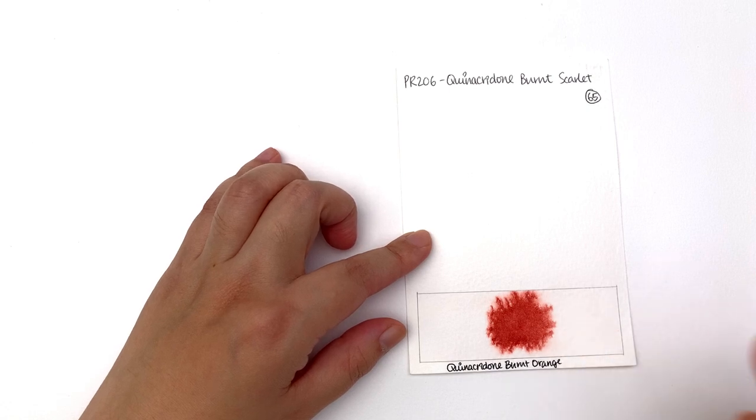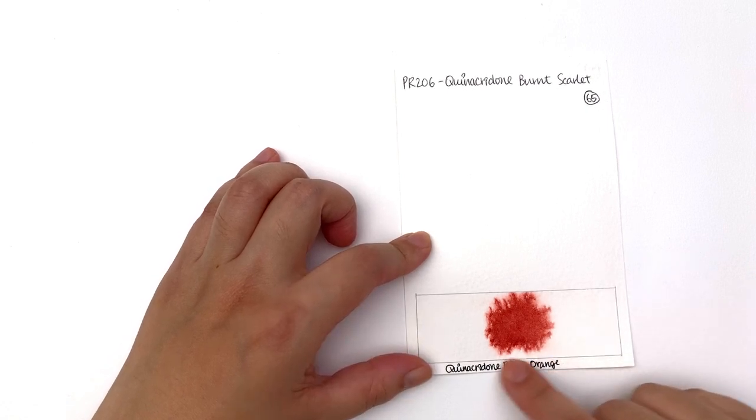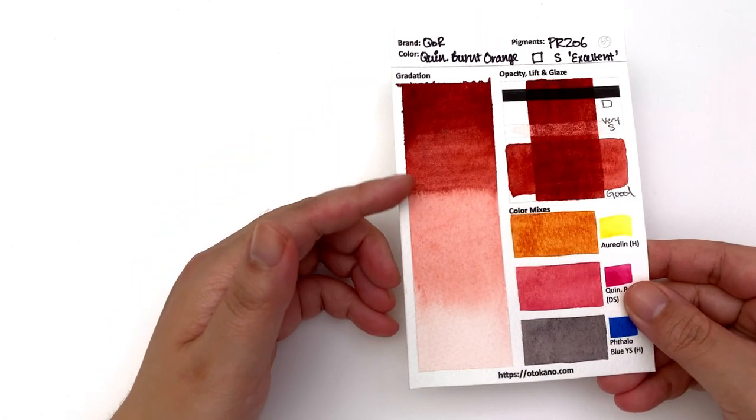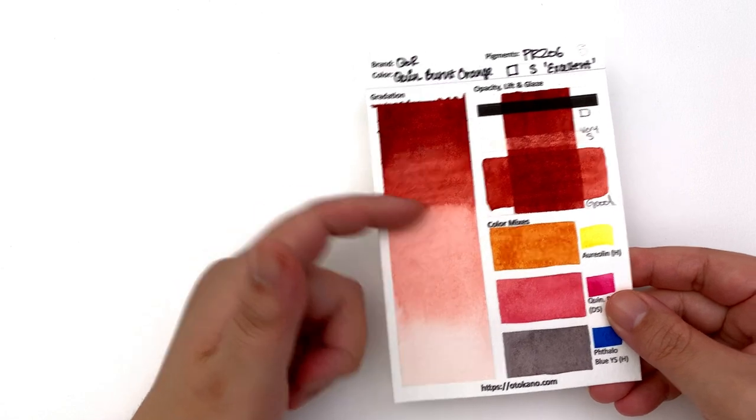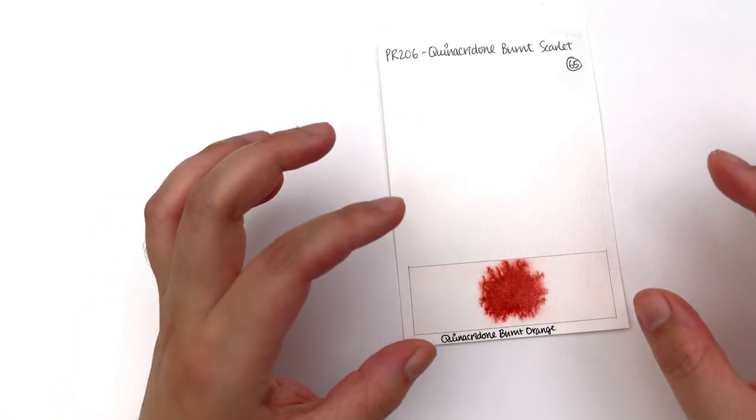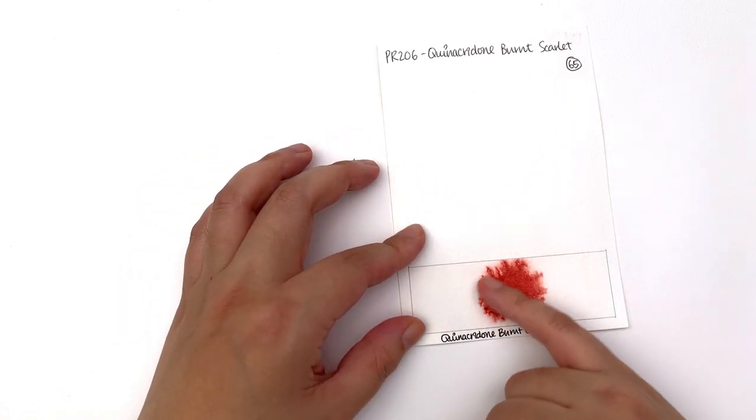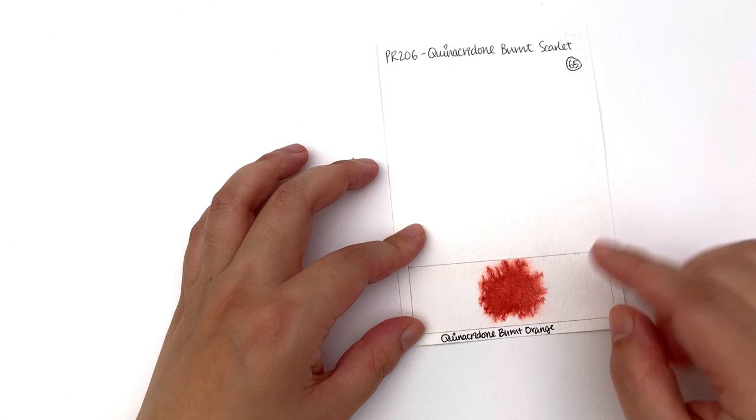It is made with PR206 which is of course the quinacridone burnt scarlet. For queen I was actually quite surprised at how little this dispersed, but I'm also not surprised considering the value just kind of stops here. So it is quite small in dispersion but I see a lot of texture and tentacles happening on this one.